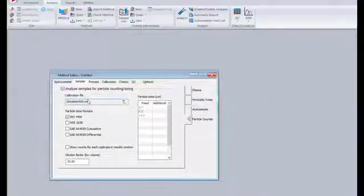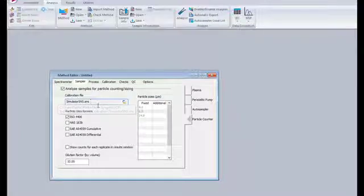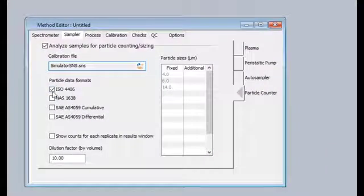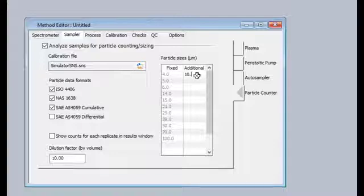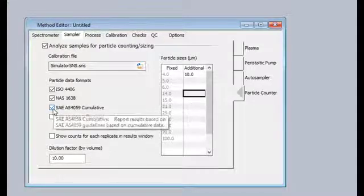This tab is also where the different particle sizes can be selected by choosing one or more of the standard formats. Some fixed sizes appear, but more can be entered by the user in the additional column. Selecting any of the formats provided also dictates what is shown in the results window and what classifications are available for when the results are exported.